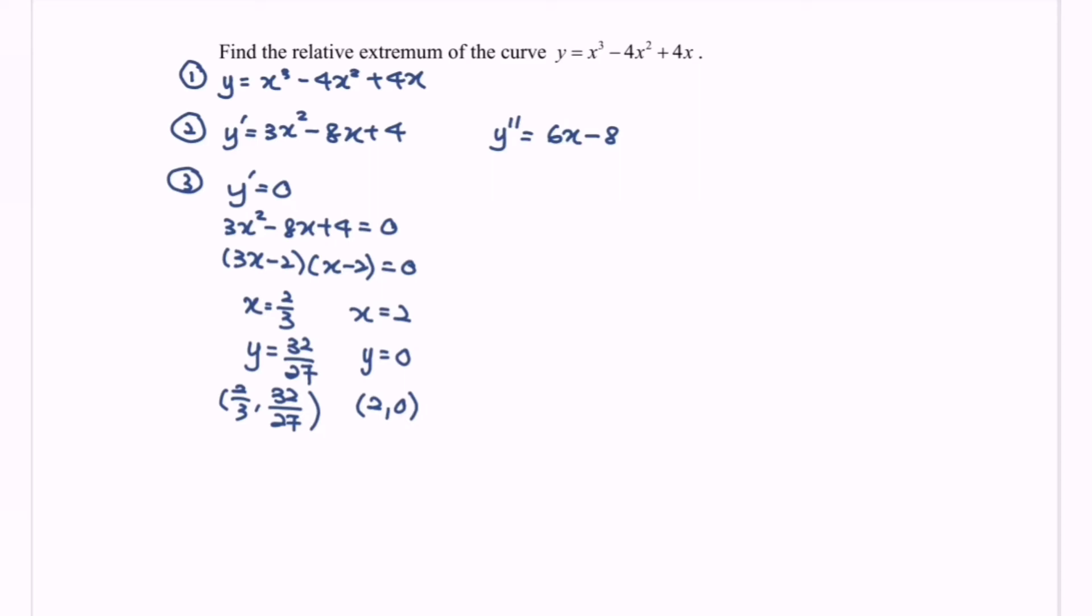Next, step number four. We have to test and find out the nature of the point. We are going to find the nature of the point by using the second derivative test. So where we have the value of x is 2 over 3 and the value of x is equals to 2.